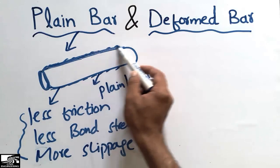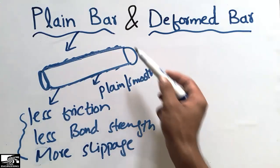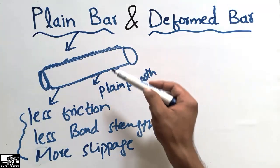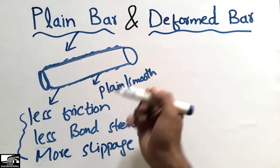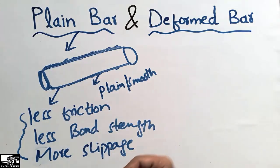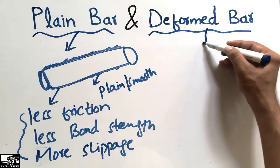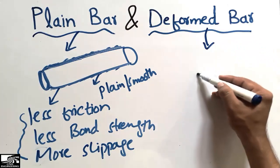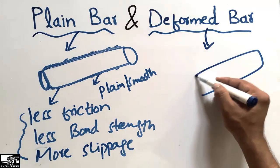These three properties occur in plain bars because their surfaces are smooth. They don't provide much resistance to the concrete, and they can be easily pulled out from the concrete.